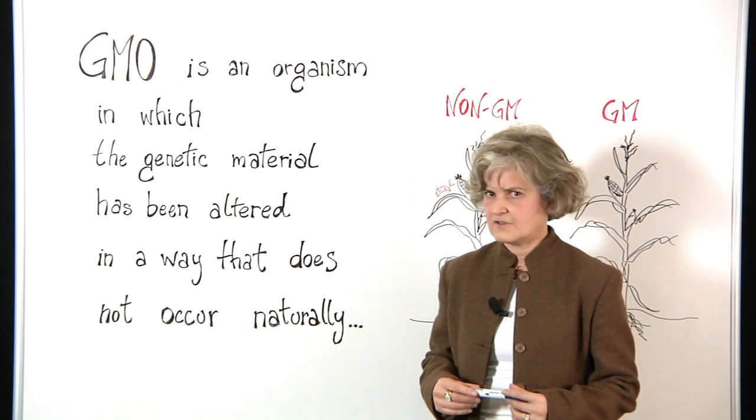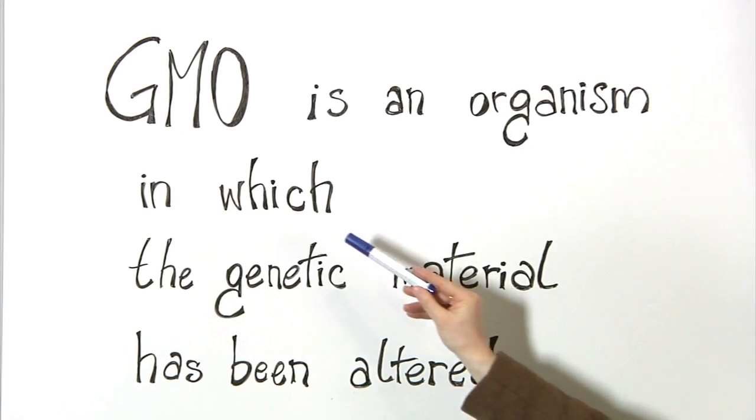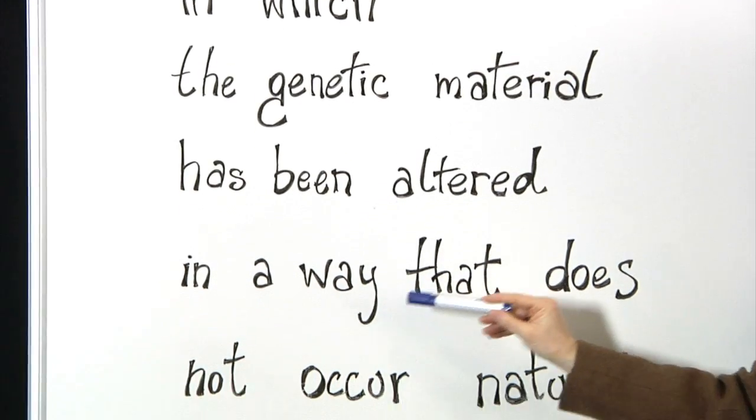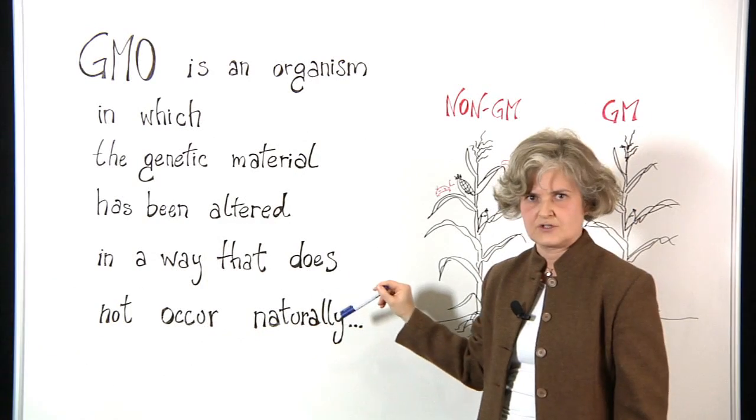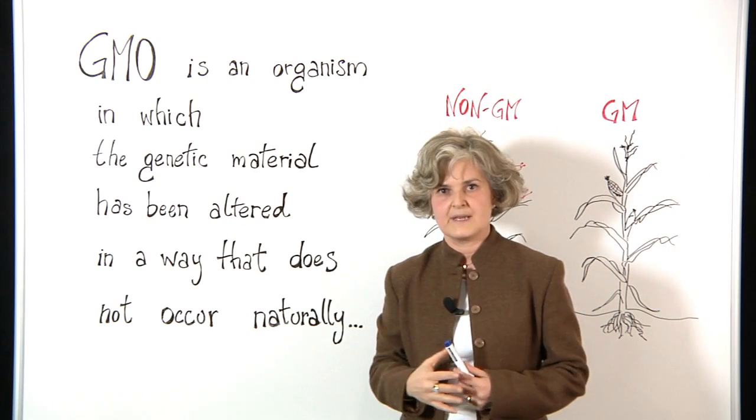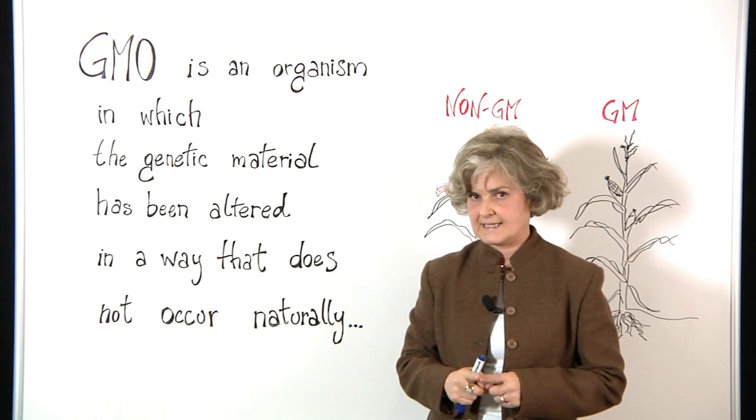What is a genetically modified organism? It is an organism in which the genetic material has been altered or changed in a way that does not occur naturally. And by naturally we mean, for example in the case of a GM plant, when we combine a father plant with a mother plant to obtain a new plant.